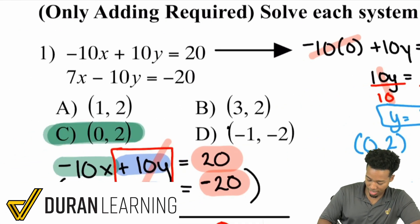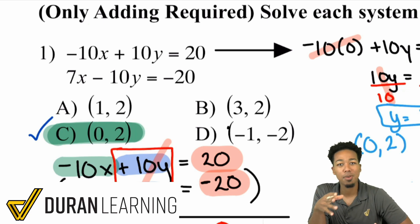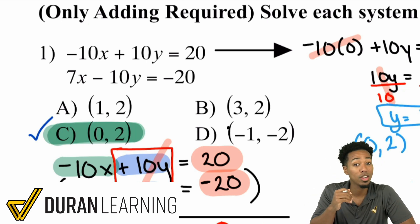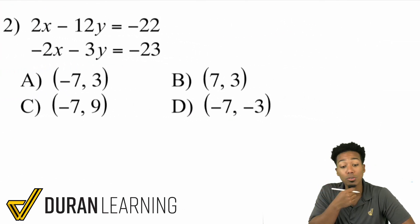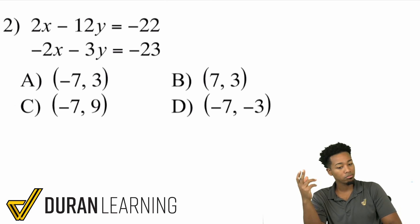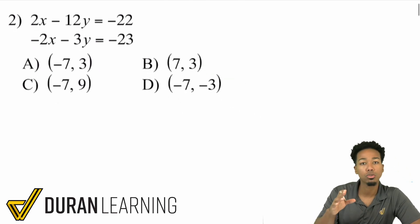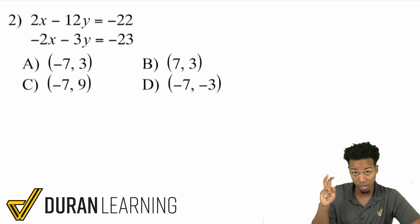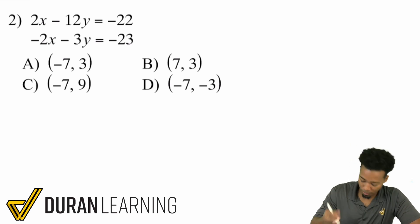Are you starting to see the pattern when it comes to elimination? We are eliminating one of the variables so we can get the other one in an equation that we can solve. Let's try another one — number two. We're going to have positive 2x minus 12y equals negative 22, and then we have negative 2x minus 3y equals negative 23. This first video is basically showing you situations where you only have to add to eliminate the variable. In the next video I'll show you how to use subtraction, and then after that, situations where you have to modify both equations.